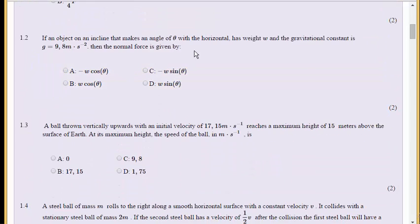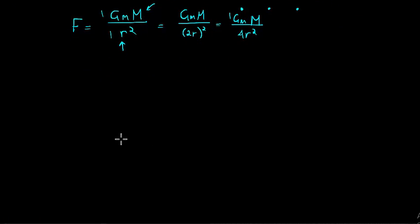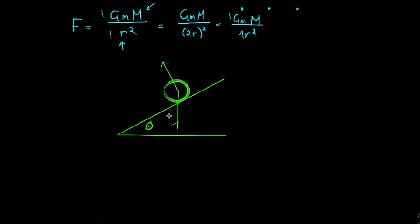Question two: an object on an incline makes an angle theta with the horizontal, has a weight w, and gravitational constant g. What is the normal force? Let me just draw it. I honestly don't know the formula off the top of my head — I literally draw it and figure it out. There's my surface, there's theta, and a round object with a downward weight force.